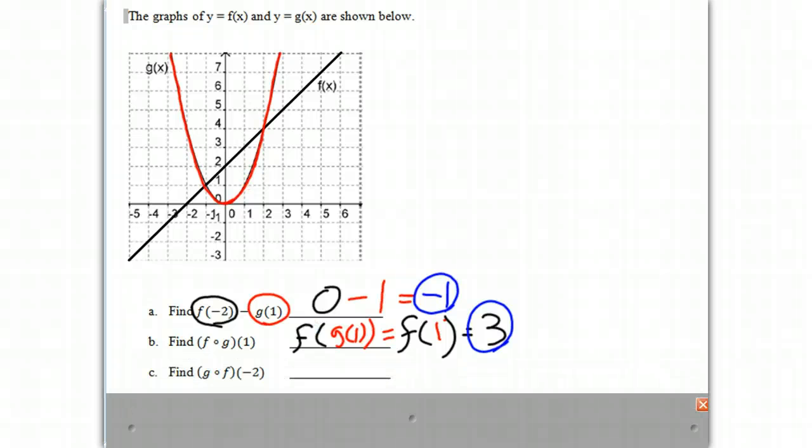In our next problem, we are going to find g circle f of negative 2. So going with what we've done before, that means g of f of negative 2.